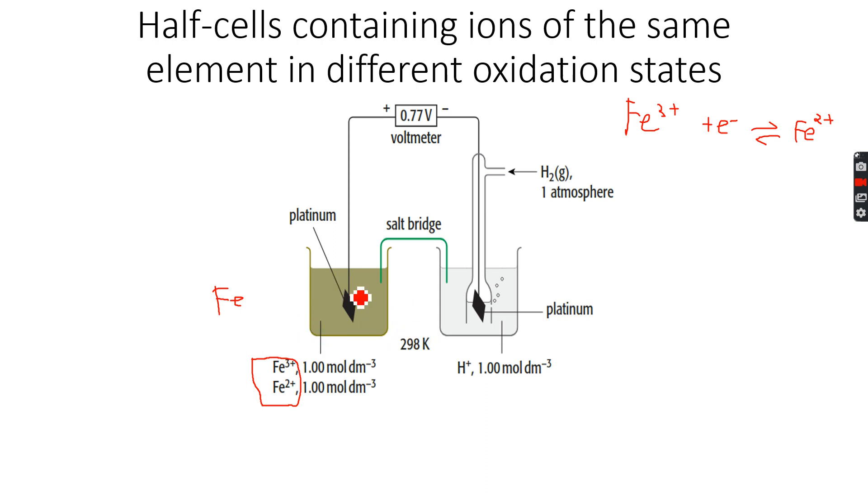And both concentrations have to be one mole per dm³. Be very careful about that. So the electrode potential of this reaction is, when I look at my data booklet, this is +0.77 volts.